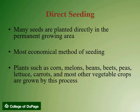Many seeds are planted directly in the permanent growing area. This is known as direct seeding and is the most economical method of seeding. Plants such as corn, melons, beans, beets, peas, lettuce, carrots, and most other vegetable crops are grown by this process.